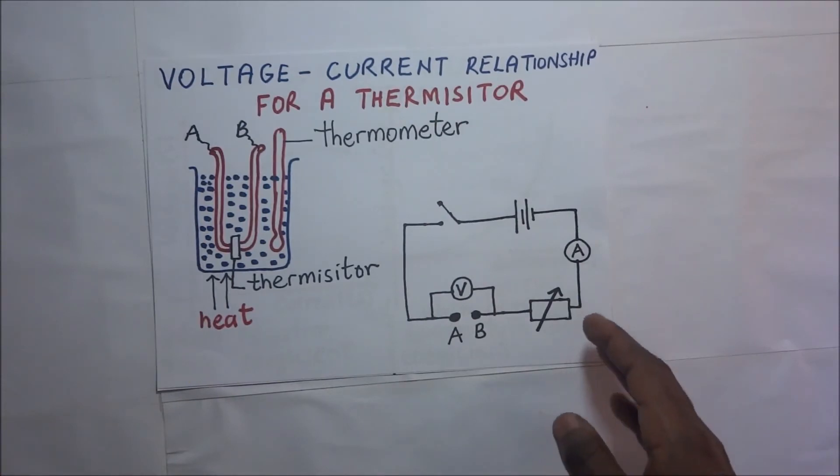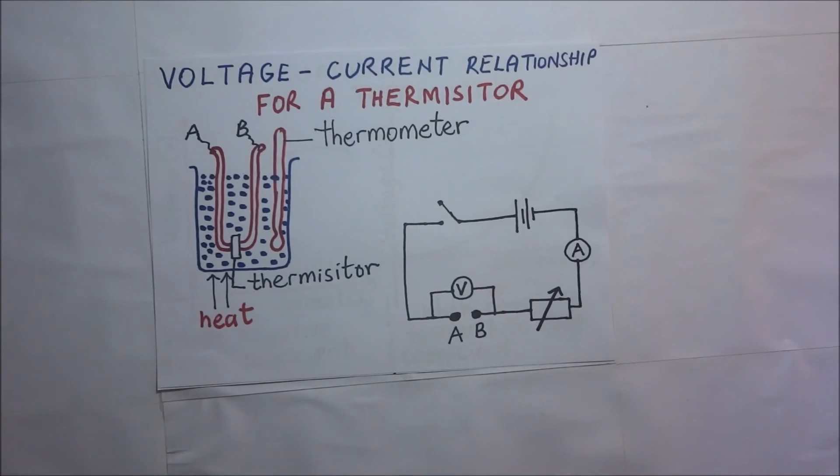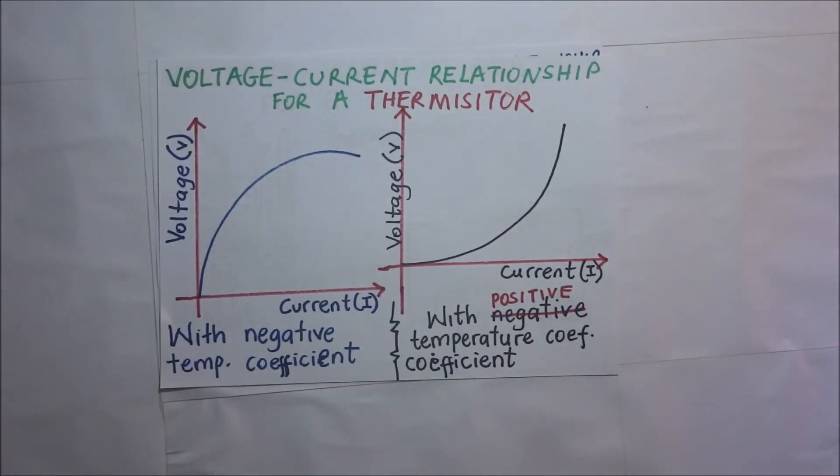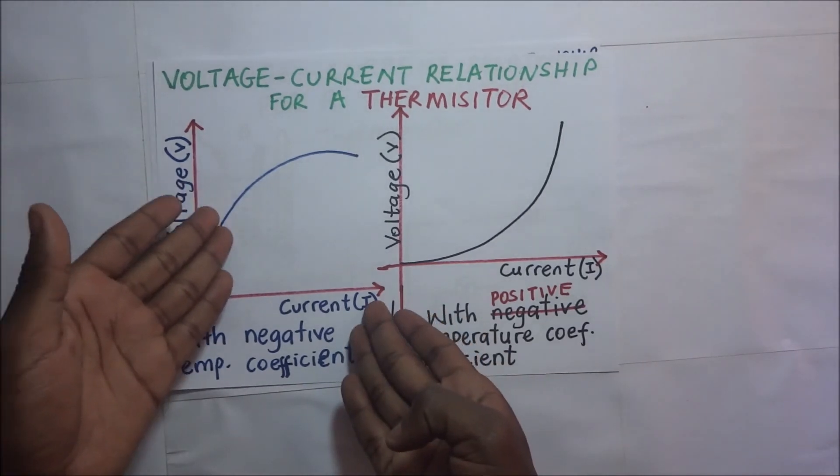When you plot your graph of voltage against current, you're going to come up with two different graphs depending on the thermistor you are using. If the thermistor you are heating in the beaker had a negative temperature coefficient of resistance, your voltage-current graph will look like this.